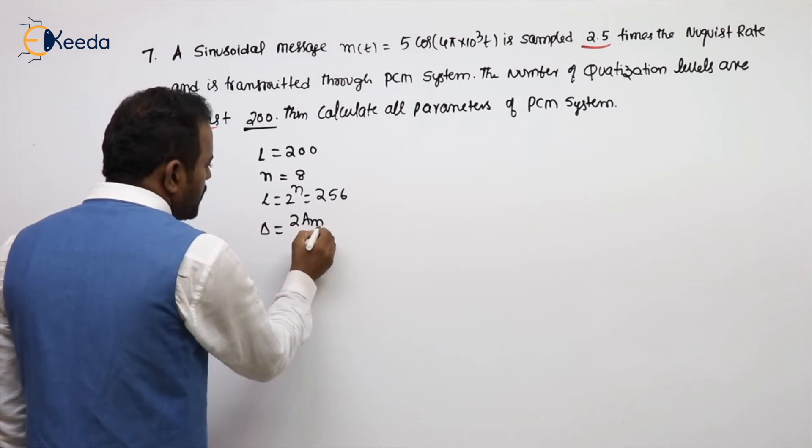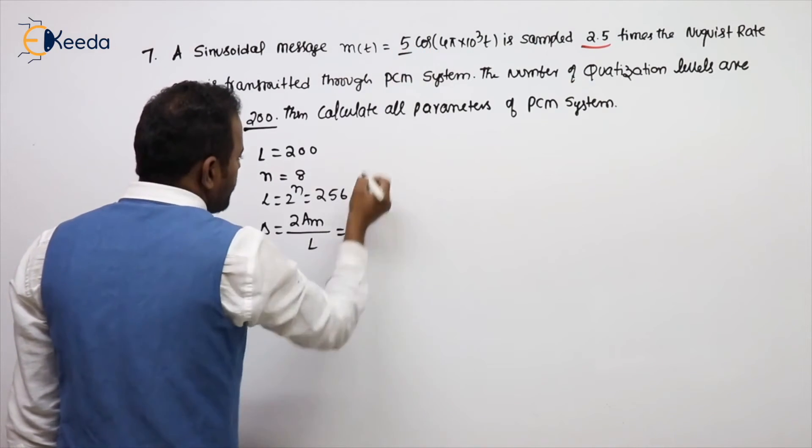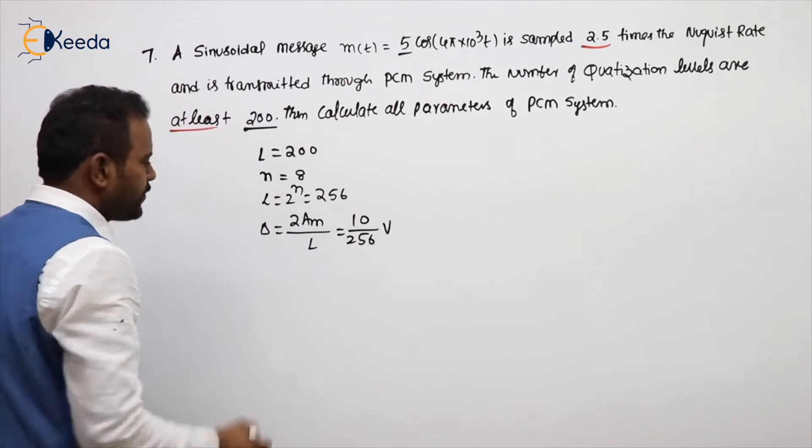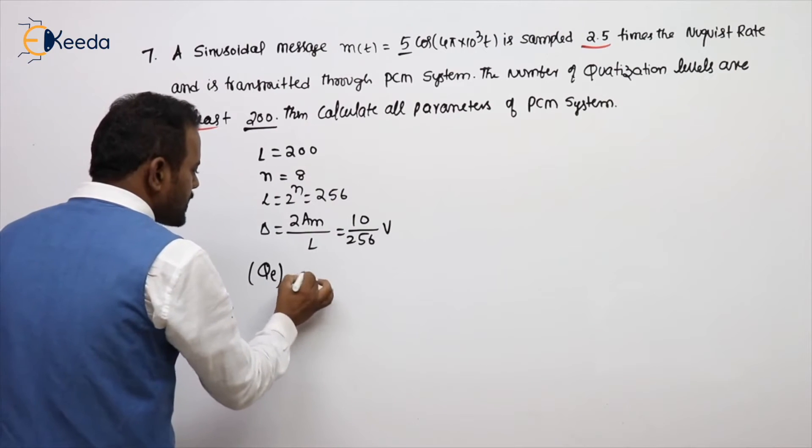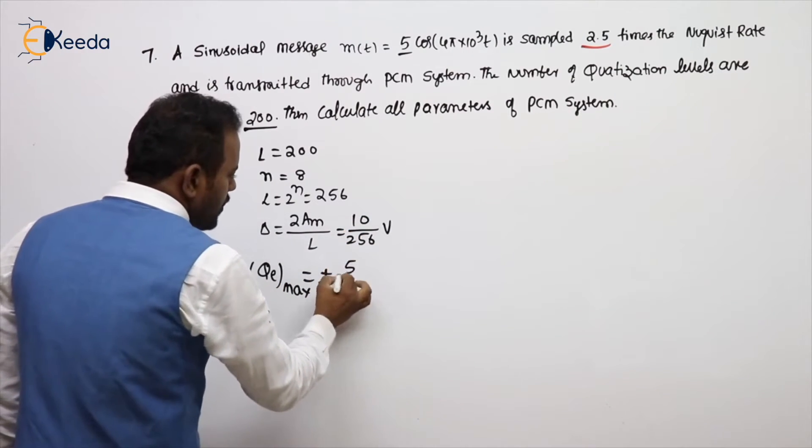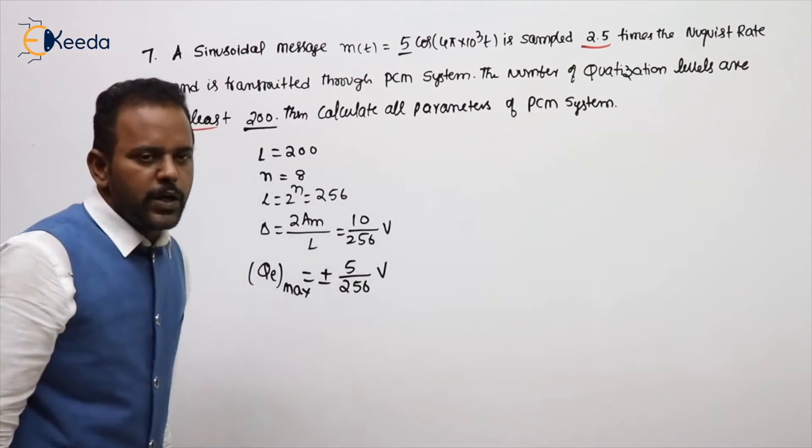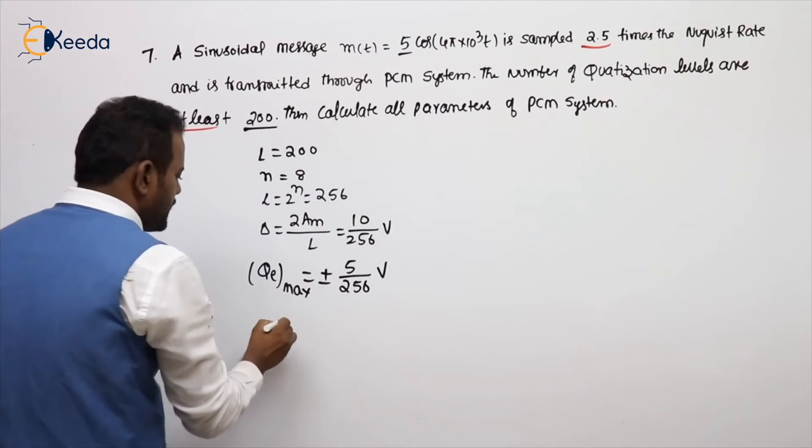Now what is the first point? Delta. Delta formula: 2AM by L or 2 power N. AM value is given 5, 2×5 or 10 by 256. Delta means volts. What is QE max sir? QE max is plus or minus delta by 2, plus or minus this by 2, so 5 by 256. Or I can say AM by 2 power N is for sinusoidal signal formula.